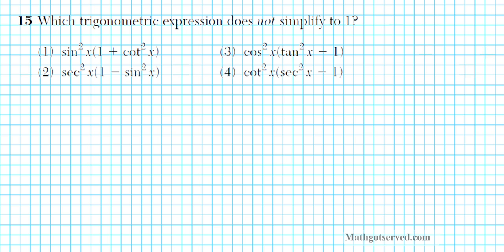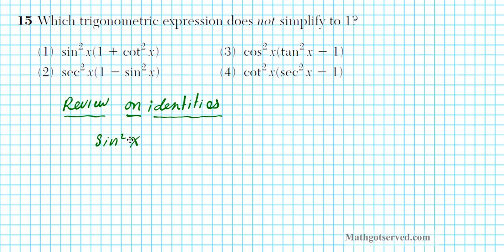Let's take a look at problem number 15: which trigonometric expression does not simplify to 1? We're going to do a quick review of our identities. The Pythagorean identity is sine squared x plus cosine squared x equals 1. From this, subtracting sine squared x from both sides gives us cosine squared x equals 1 minus sine squared x.